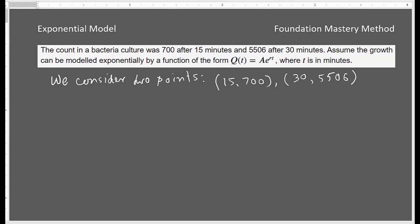We are given exponential models Q(t) = Ae^(rt) where t is in minutes. We take our independent variable t and dependent variable Q. When I take this one as a point, my t is 15 and my Q is 700. For this option, my t is 30 and my Q is 5506. These are two points through which this model will pass.